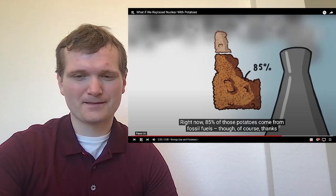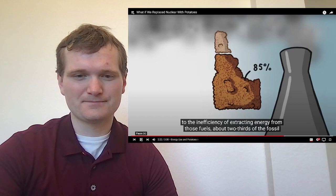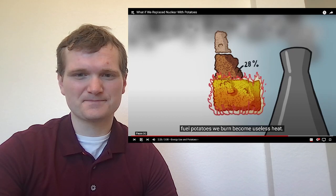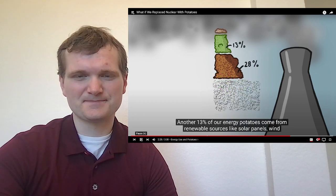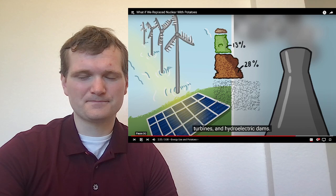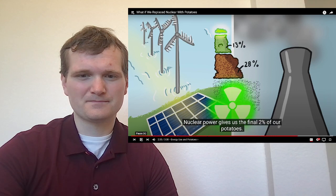The potatoes come from fossil fuels. Though, of course, thanks to the inefficiency of extracting energy from those fuels, about two-thirds of the fossil fuel potatoes we burn become useless heat. Another 13% of our energy potatoes come from renewable sources like solar panels, wind turbines, and hydroelectric dams. Nuclear power gives us the final 2% of our potatoes.